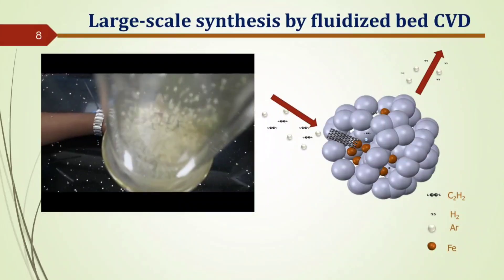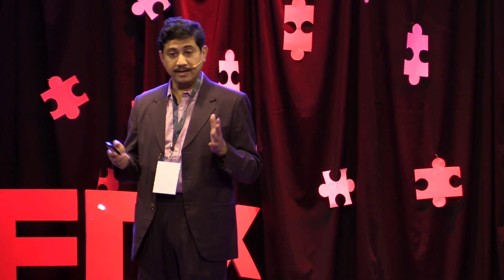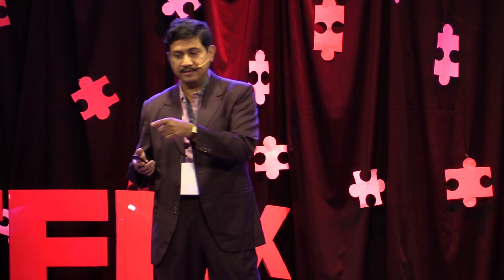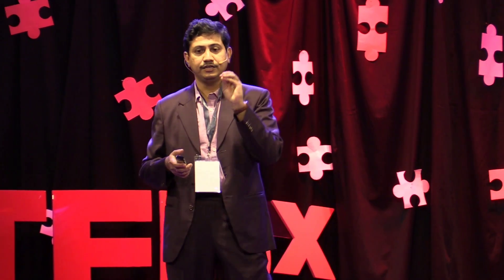What is fluidized bed chemical vapor deposition? In this process, some solid materials are made to behave like a fluid with the help of a gas. In this condition, you are exposing all the particles in a suspended state. By sending a hydrocarbon gas through these fluidized particles, you can deposit nanoparticles and carbon nanotubes by this method.